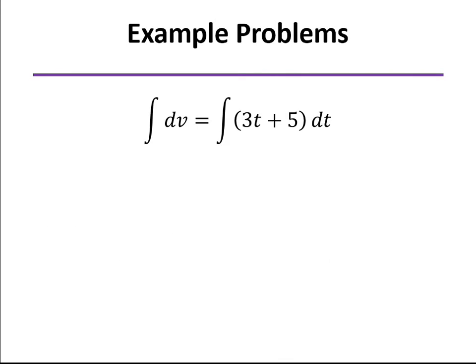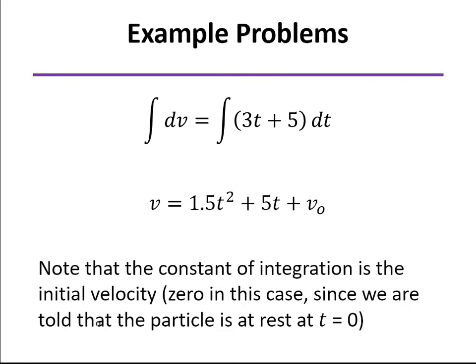And when we do that indefinite integral, we end up with a constant of integration. And that constant of integration is simply the initial velocity. In this case, we're told it's at rest at the beginning. And so our initial velocity is going to be zero.